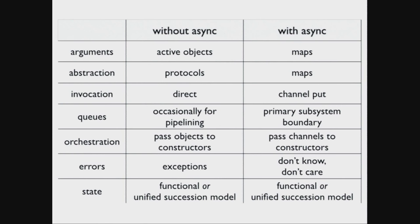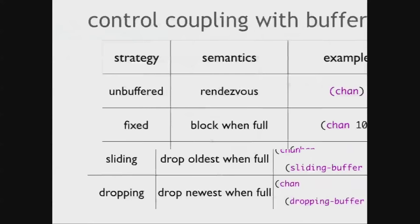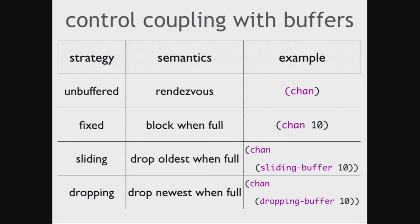In order to do all this — particularly the orchestration and error handling — we can't just have those simple coordination channels. There has to be an ability to put buffers on channels. The basic coordination primitive is channel, which is unbuffered — a producer and a consumer have to rendezvous to exchange a value. You can also have a fixed channel that blocks when it's full. Or a sliding channel that drops old stuff when it's full. Or a buffer that drops the newest one when full. You could extend the system to do other things, but typically you won't need much more than that.